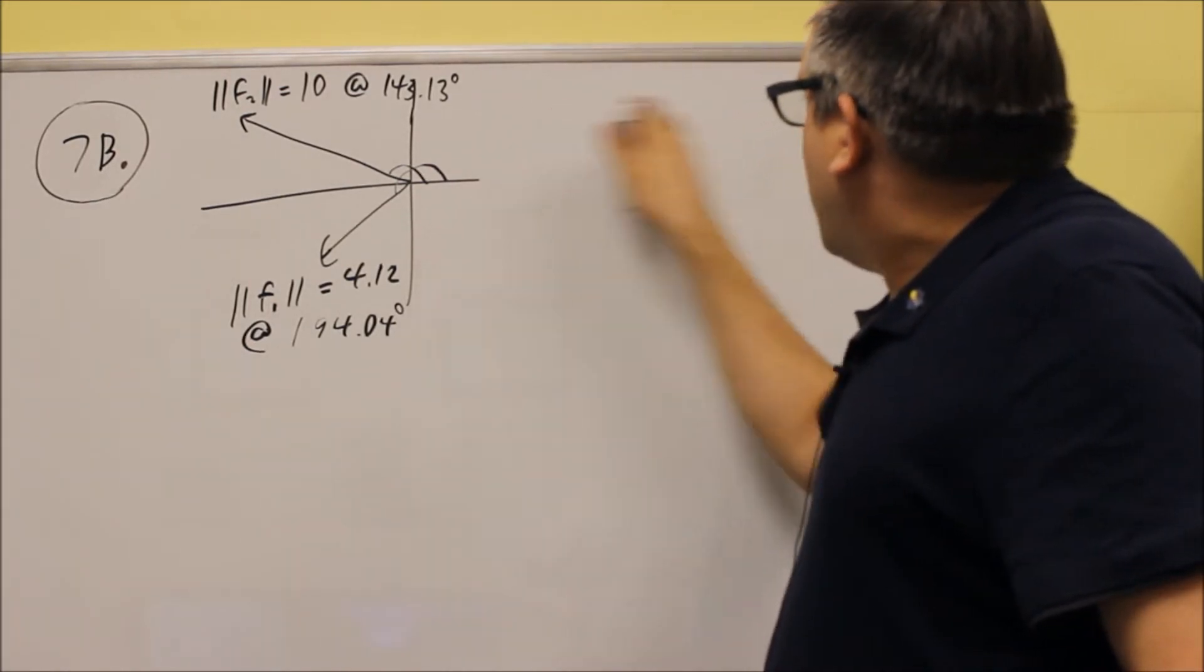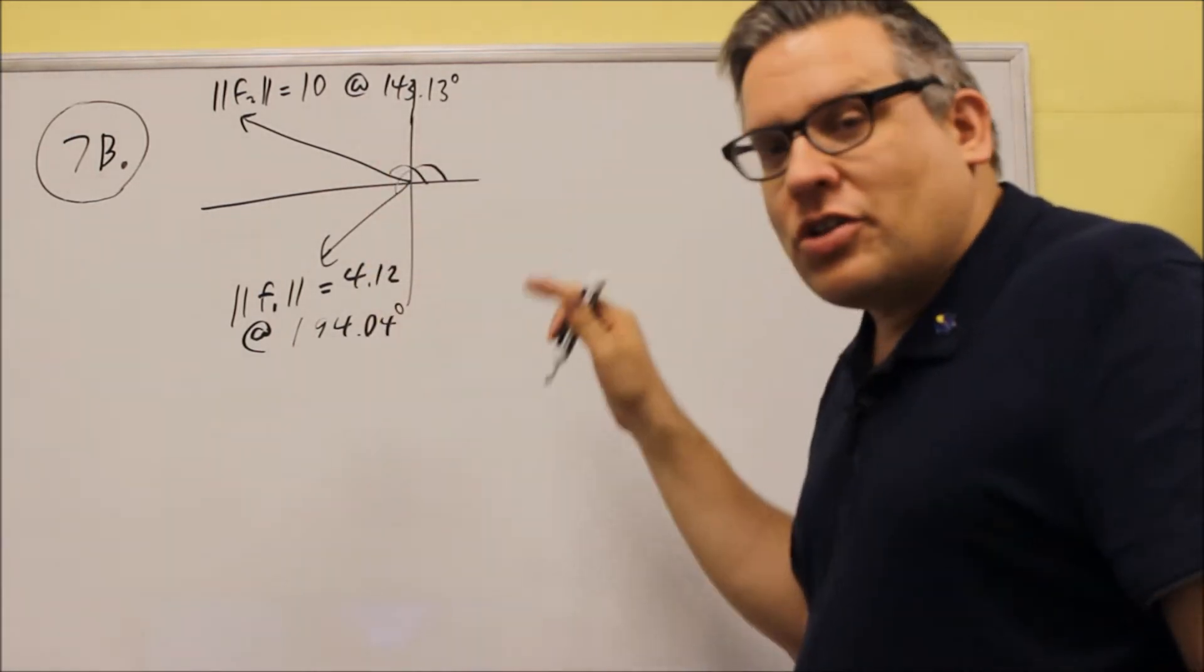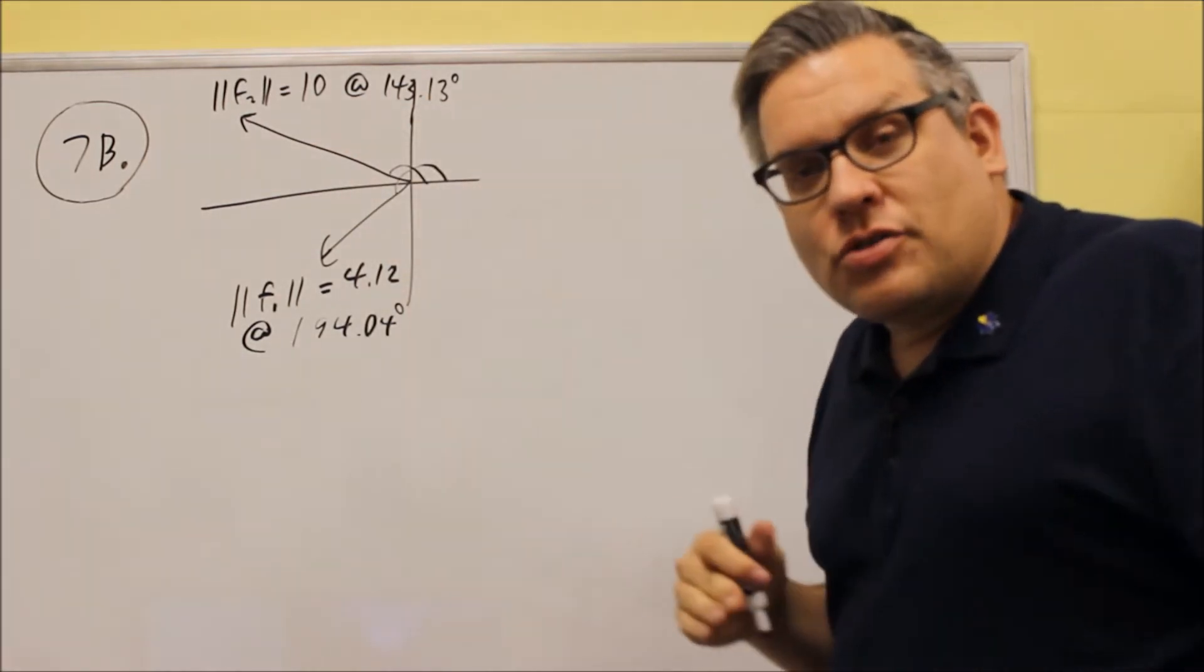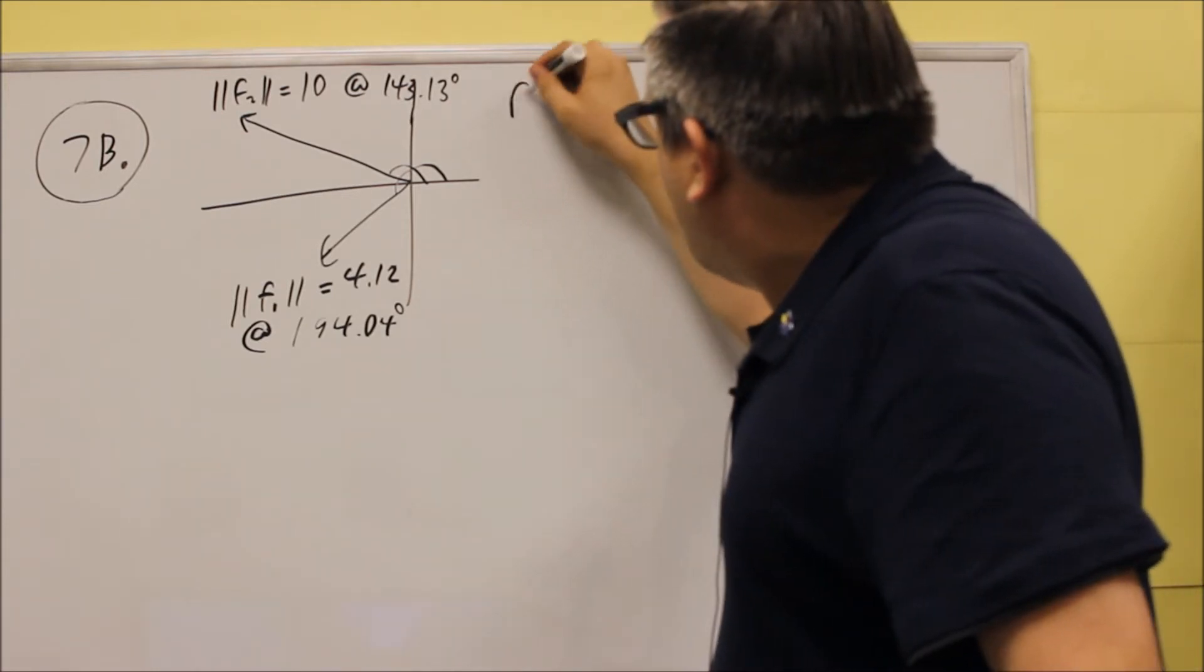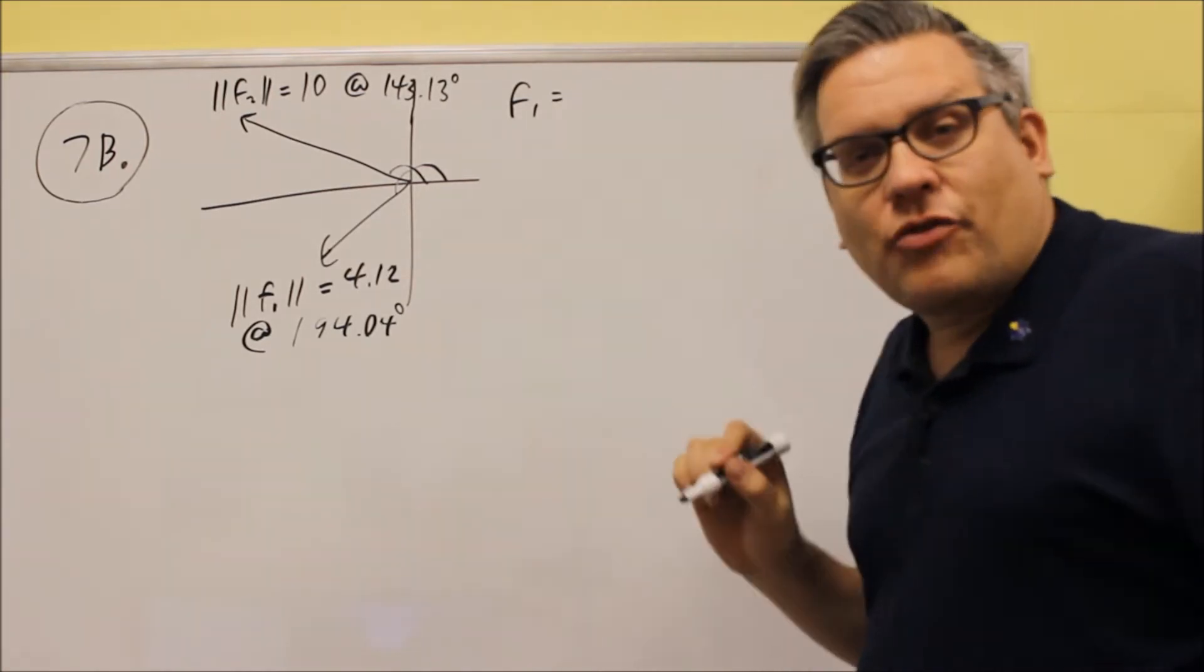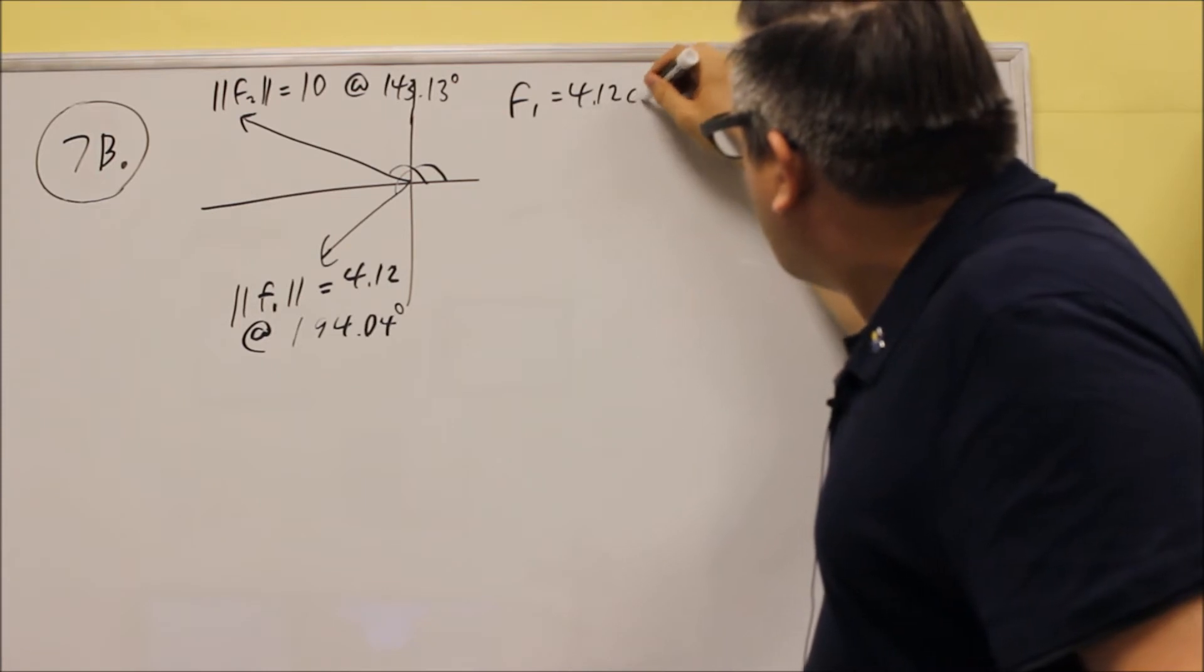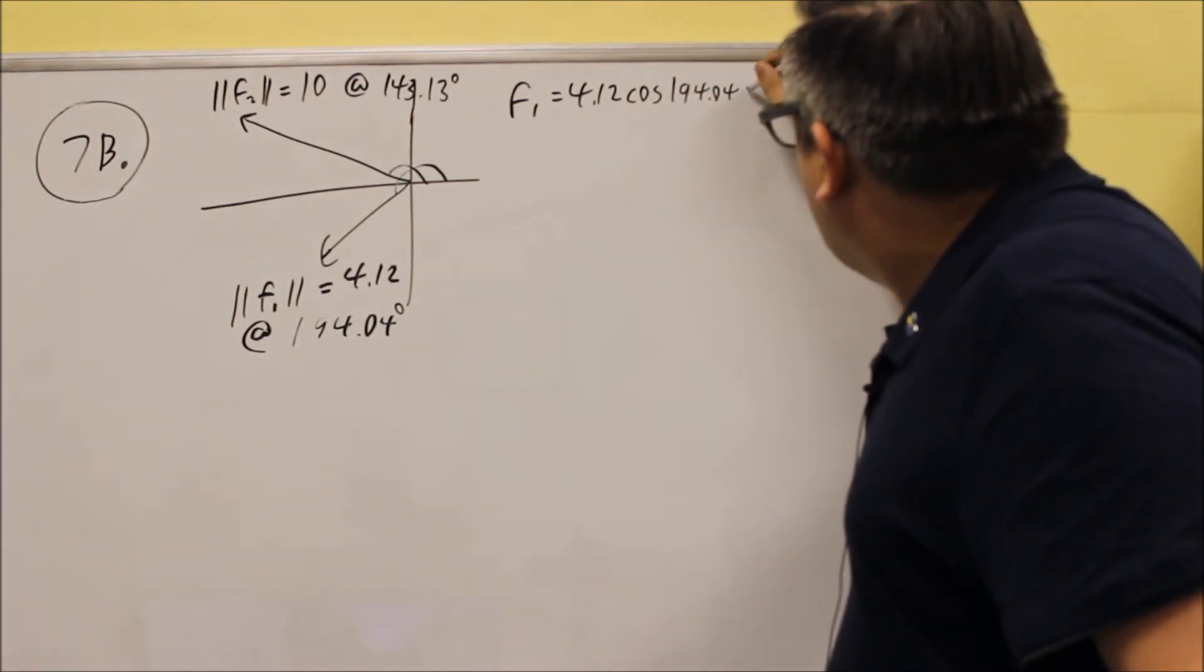So next, we have to write out the forces for each one. We want to change the picture here with magnitudes and angles into components, i and j components. So let's start with the F1. So F1, the magnitude is 4.12. When we write that out for the i, we're going to use a cosine. So we're going to do 4.12 cosine 194.04, that's i.